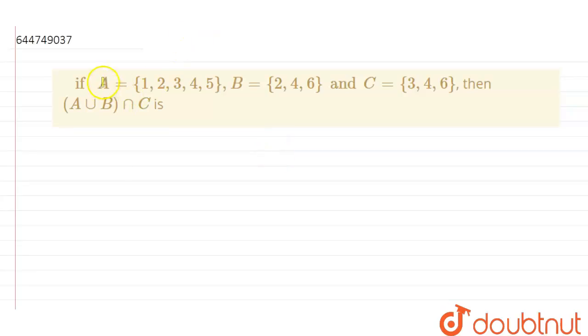Hello friends, so today our question is: if A is equal to set {1, 2, 3, 4, 5} and B is equal to {2, 4, 6} and C is equal to set {3, 4, 6}, then we have to find out A union B intersection C.